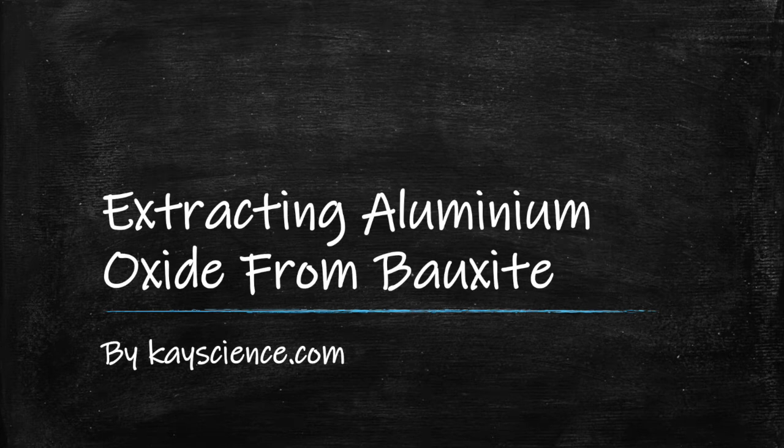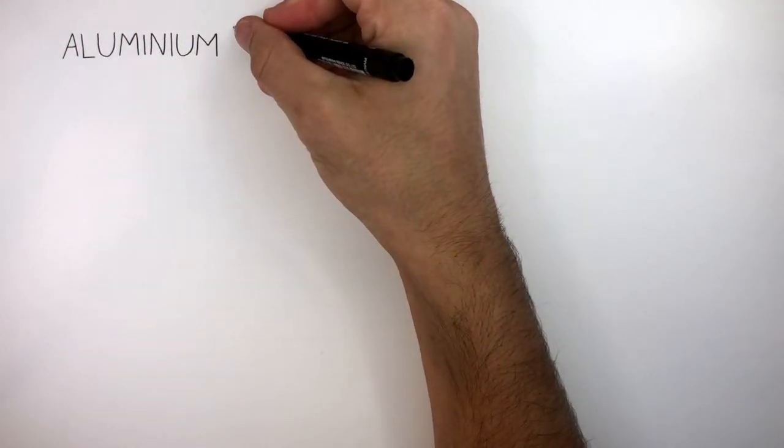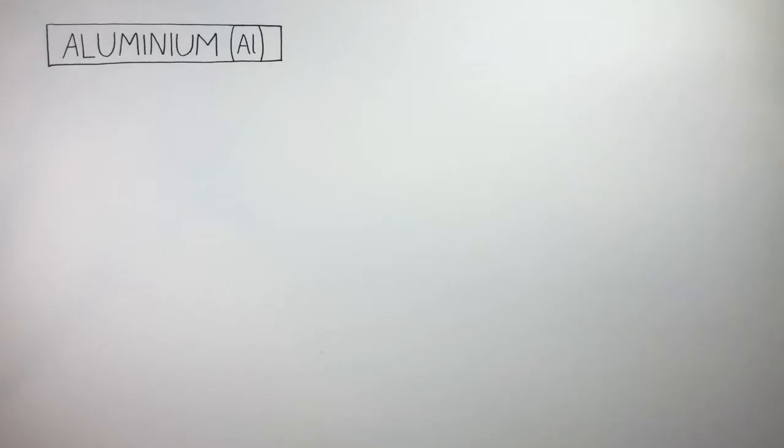Extracting Aluminium Oxide from Bauxite by Kscience.com. Aluminium is a metal which has the chemical symbol Al. It is a very useful metal which is used widely in society for many different uses.